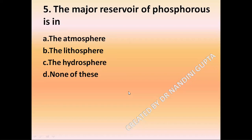Question 5: The major reservoir of phosphorus is — option A, the atmosphere; option B, the lithosphere; option C, the hydrosphere; option D, none of these. So, the phosphorus — what is the major reservoir of phosphorus?